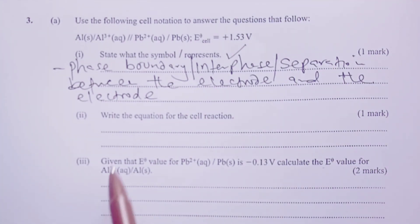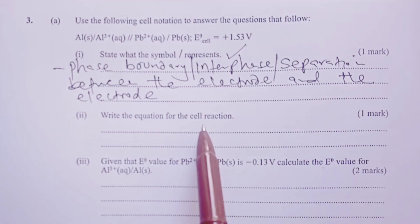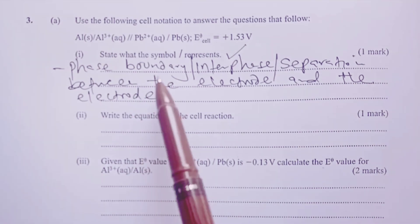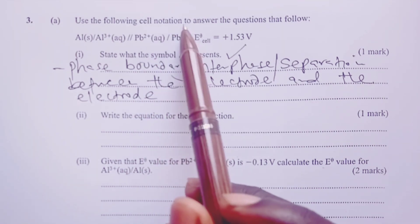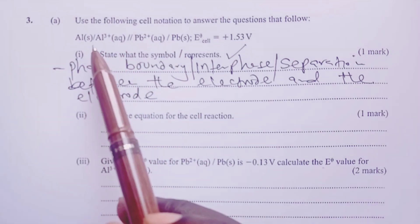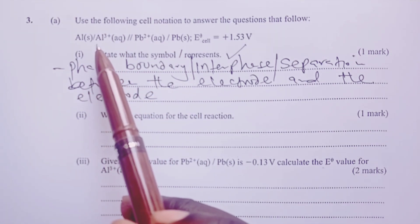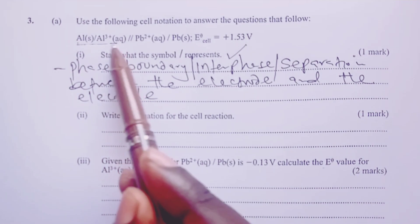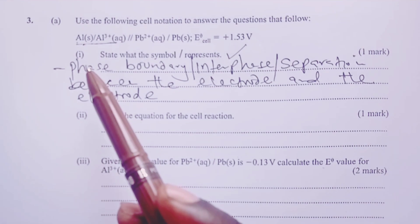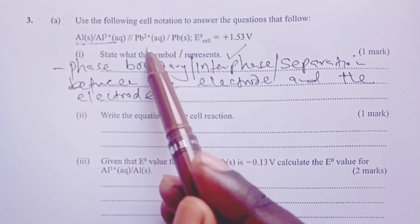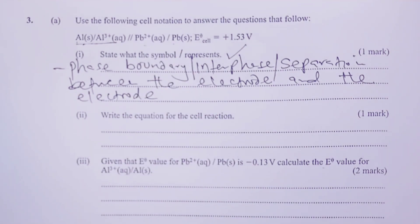Roman two, we are asked to write the equation for the cell reaction. So here, a candidate needed to have known that when doing cell notation, we've always agreed that the half cell that undergoes oxidation is the one that we put on the left hand side. So for this case, aluminum will be oxidized and lead would be reduced.